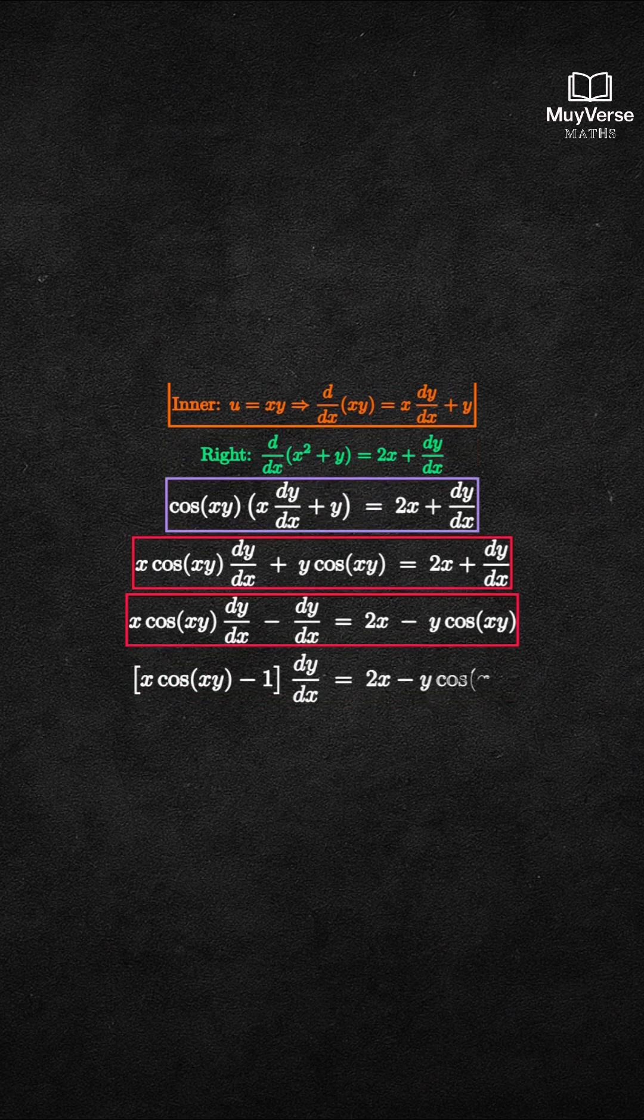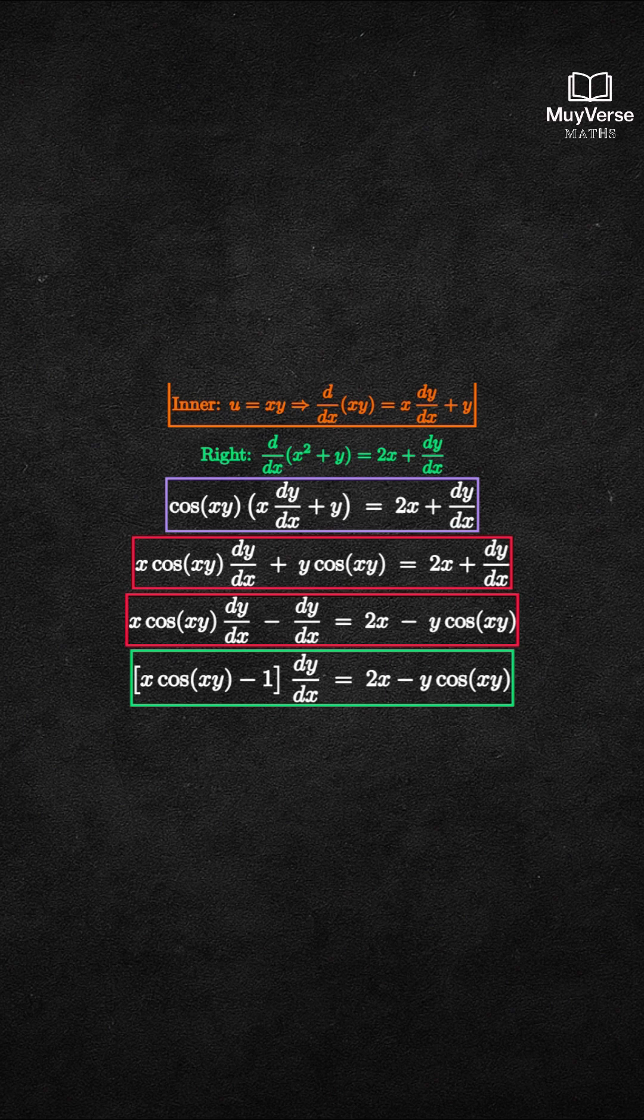Now factor out dy/dx. The bracket x cosine of xy minus 1 times dy/dx equals 2x minus y cosine of xy.